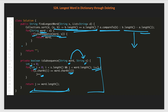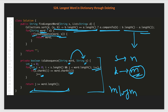What is the time complexity of this solution? String s has length n and the dictionary has m words. Sorting takes O(m log m) time using Collections.sort. Then we compare each of the m words against string s to check subsequence, which is O(n) per word. So in the worst case the time complexity is O(m·n).